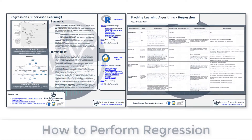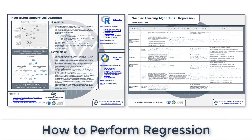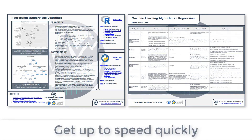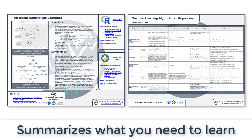This is a special cheat sheet that we've just developed to cover how to perform regression and some of the major significant algorithms that are out there in the space. It's aimed at those trying to learn machine learning who want to get up to speed very quickly — it contains a summary of all the key information that you'll need to learn.